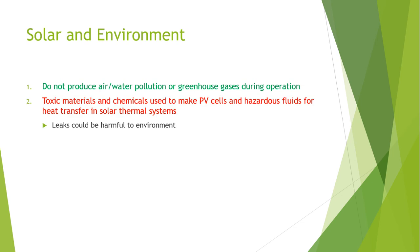However, toxic materials and chemicals are used to make the solar cells, and those chemicals are very dangerous fluids that use heat to transfer in solar thermal systems. The primary material being used in solar cells widely available in the market today is silicon, which is most widely used and is basically derived from quartz.